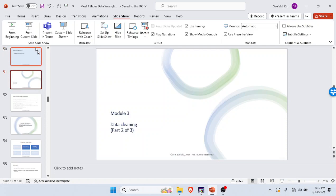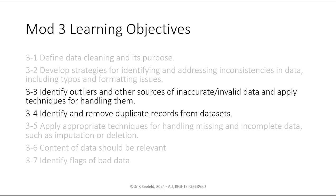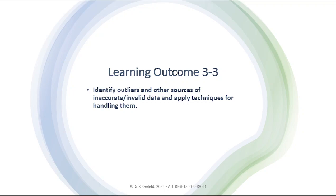Let's go on and talk about part two of module three. We are in the grand subject of data cleaning, which is a core topic in this course. The learning objectives for this video are objective 3-3, which is to identify outliers and other sources of inaccurate and invalid data and apply techniques to handle them, and objective 3-4, which is to identify and remove duplicate records from the data set.